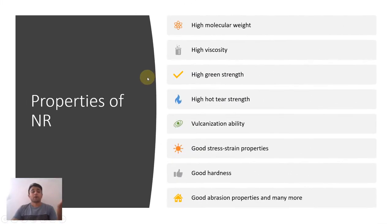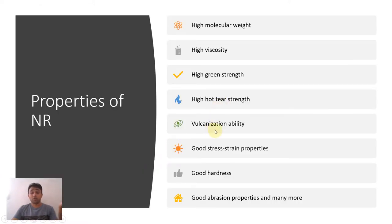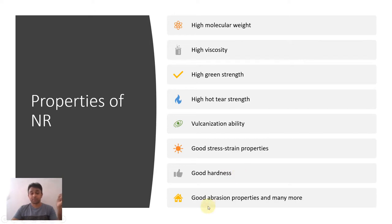Natural rubber is a high molecular weight polymer, so it has high viscosity and high green strength. It also has high hot tear strength. Due to the unsaturation — double bonds — we can perform vulcanization, meaning cross-linking rubber with sulfur-like cross-linking agents. Because of high molecular weight and the ability to cross-link, it has good stress-strain properties, good hardness of around 40 IRHD (International Rubber Hardness Degrees), and good abrasion properties.